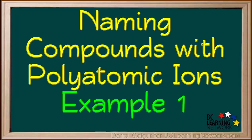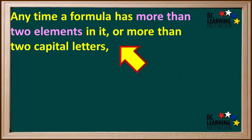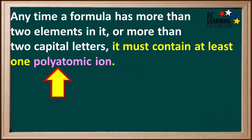We'll go over the method of naming ionic compounds that have one or more polyatomic ions. Anytime a formula has more than two elements in it, or more than two capital letters, it must contain at least one polyatomic ion.